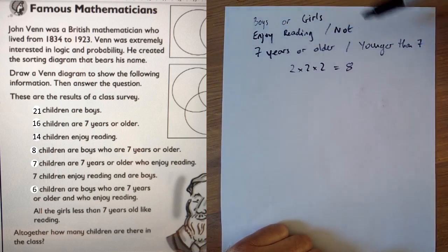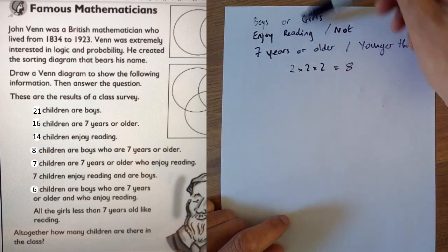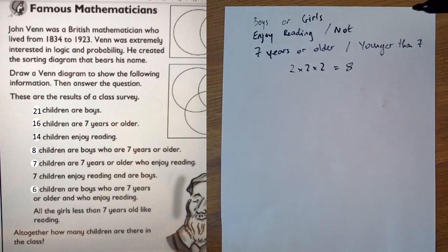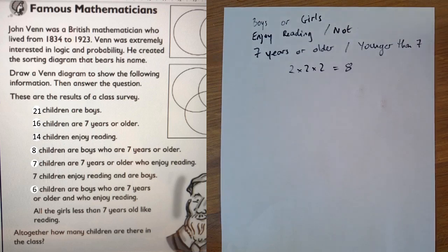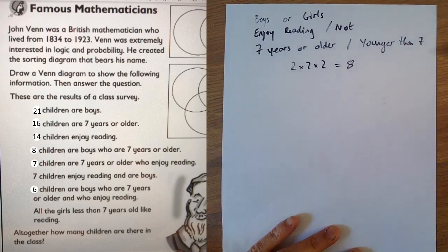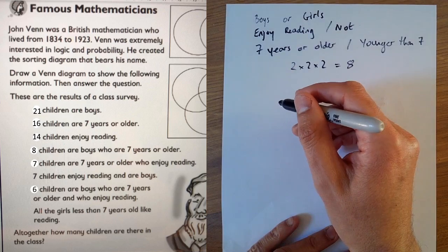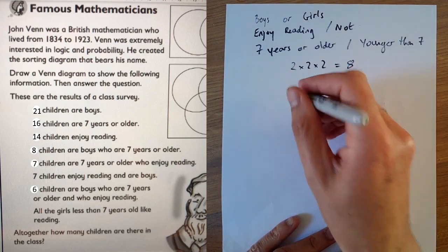You could be a boy who enjoys reading who's younger than seven. That's another one of the eight. And if you started writing down the list of all the different categories you could be in and you managed to write all of them, you would realize that there's eight different types of people you could be under these things. You don't really need to understand too much of that, but I'll show you why I mention that in a minute.